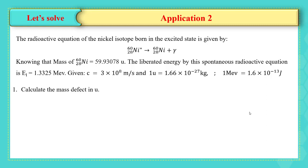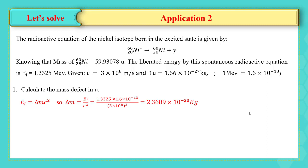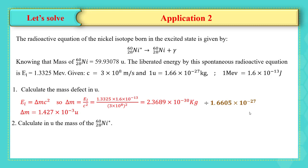We don't have the mass of the parent nickel, so we cannot determine the mass defect by making the difference in masses between reactant and product. But we can use the relation of the liberated energy, since we have it. So the mass defect is equal to the liberated energy divided by the square of the speed of light in vacuum. We convert the energy from mega electron volt to joule, and then get delta m equal to 2.3689 times 10 to the power of minus 30 kilogram. Dividing by 1.66 times 10 to the power of minus 27, we get delta m equal to 1.427 times 10 to the power of minus 3 u.